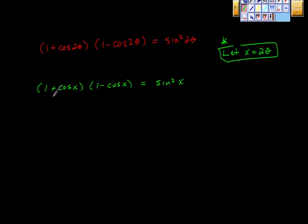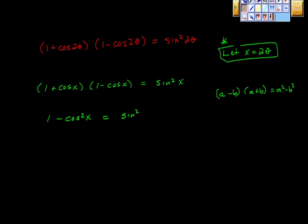Now, we can just FOIL this if you'd like, but hopefully you recognize this as a difference of squares. Difference of squares tells us that if we have a minus b times a plus b, that gives us a squared minus b squared. So going with that idea, that should give us 1 minus cosine squared x is equal to sine squared x. I have not done anything to the right-hand side because we're supposed to be transforming the left-hand side into the right-hand side.